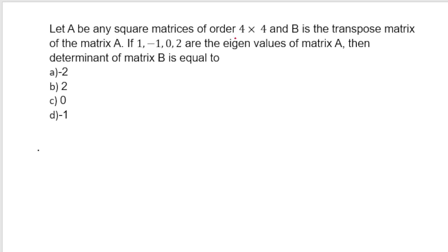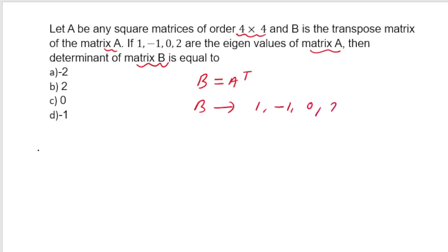Let A be a 4×4 matrix with eigenvalues 1, −1, 0 and 2. B is the transpose of A. What is det(B)? A matrix and its transpose have the same eigenvalues, so B also has eigenvalues 1, −1, 0 and 2. det(B) = product of eigenvalues = 1×(−1)×0×2 = 0. The correct option is C: det(B)=0.